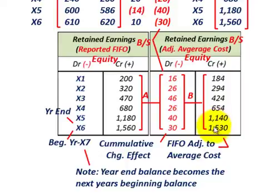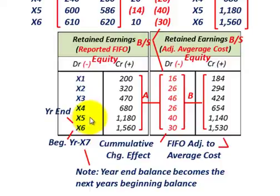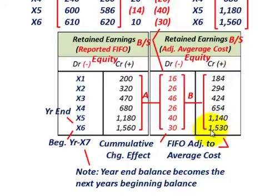The retained earnings end of year X6 for the average cost method was $1,530,000, and that becomes the beginning of year X7 retained earnings using the average cost method. The FIFO retained earnings had to be adjusted using this cumulative change effect to determine what retained earnings would be under the new average cost inventory method.